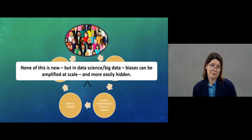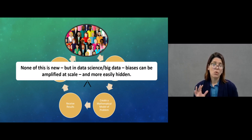We're at the end of the activity, but one thing I want to say is that none of this is new. These are things that have always been here whenever we're talking about research and science. None of this is new. So the difference here is that in data science and big data, biases can be amplified at scale and it can be more easily hidden.